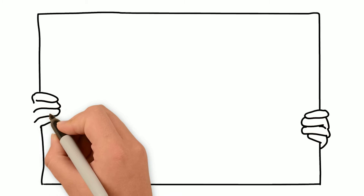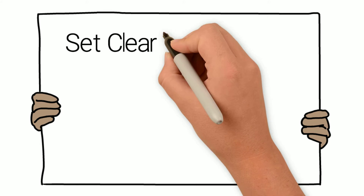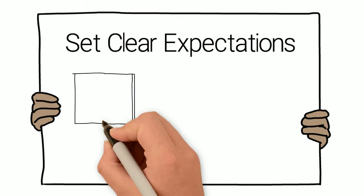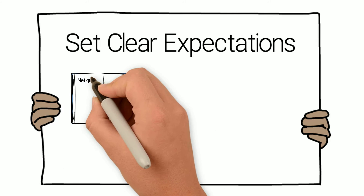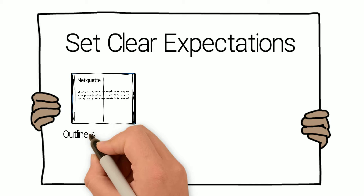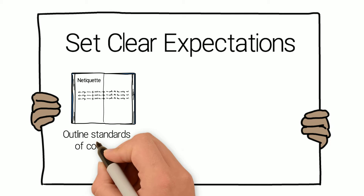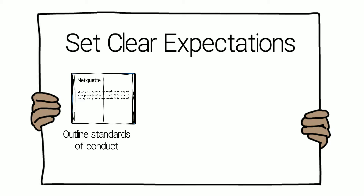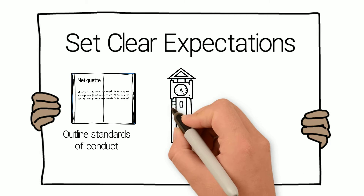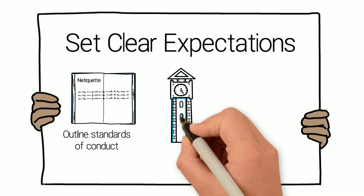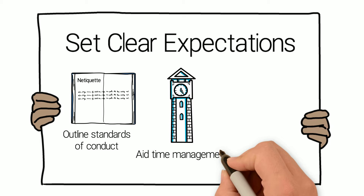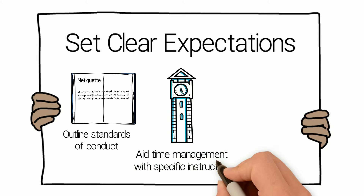Next, set clear expectations. Outline the standards of conduct you expect in your online course with a netiquette guide — a set of rules for behaving properly online. Remind your students that they're communicating with real people and to respect each other's time. Tell your students exactly what you expect from them for each module, discussion, and activity. Students need these parameters to effectively manage their time, especially in self-paced or asynchronous courses.